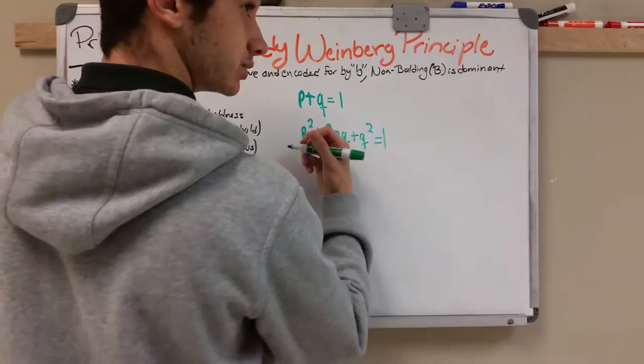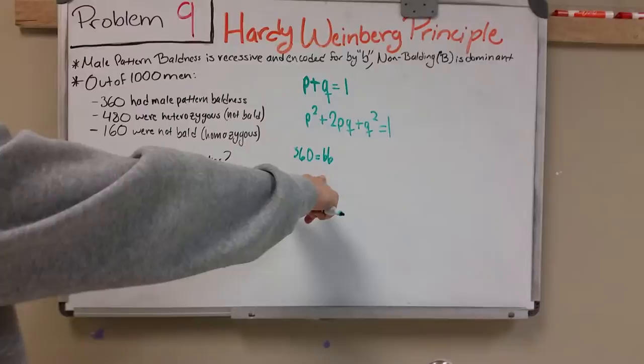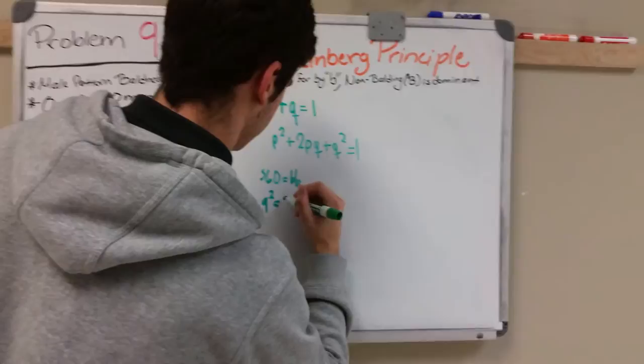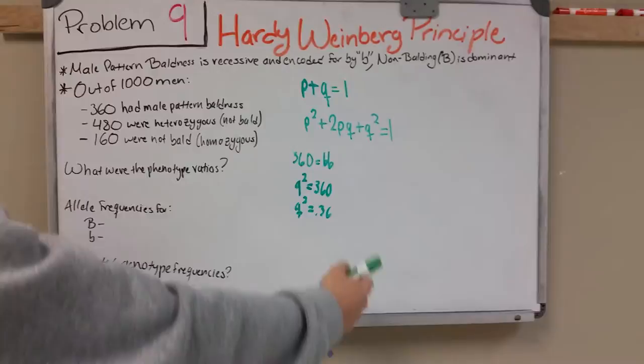So we know that 360 had the homozygous recessive, so 360 equals q². This basically translates into q squared equals 0.36, because 360 divided by a thousand gives us a decimal of 0.36.